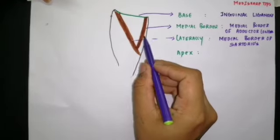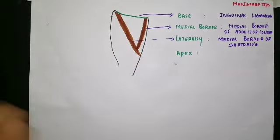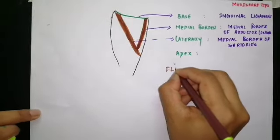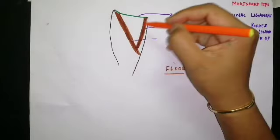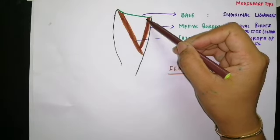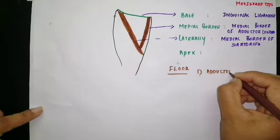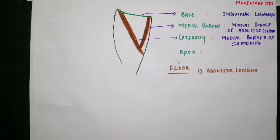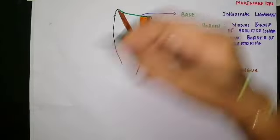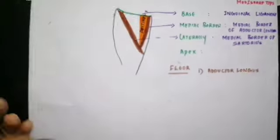The apex is continuous downwards with the adductor canal. Now, looking at which structures form the floor of the triangle: the first structure on the lateral side is the adductor longus itself, which forms both the medial boundary and part of the floor. Lateral to adductor longus is the pectineus muscle.